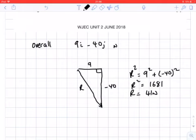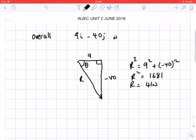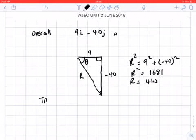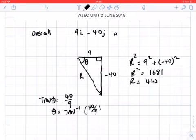Now we want to find our angle, which is to the I direction, so theta. Tan theta equals opposite over adjacent, which is 40 over 9. So theta is the inverse tan of 40 over 9, which gives an answer of 77.3 degrees.